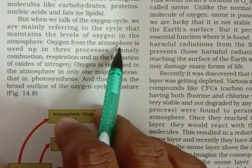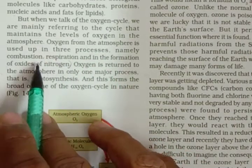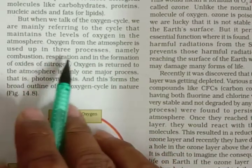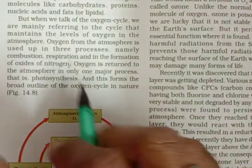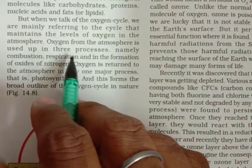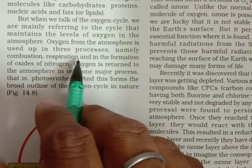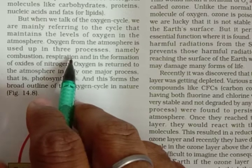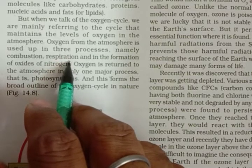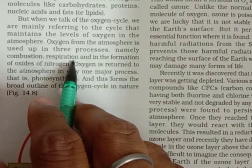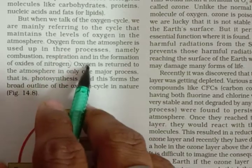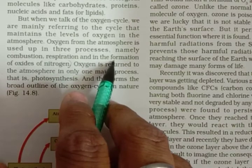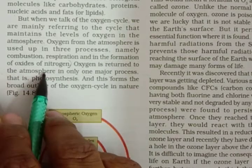The oxygen available in the atmosphere is used for burning. We respire oxygen and breathe out carbon dioxide, returning carbon dioxide to the atmosphere while using up oxygen. The third use is in the formation of oxides of nitrogen.